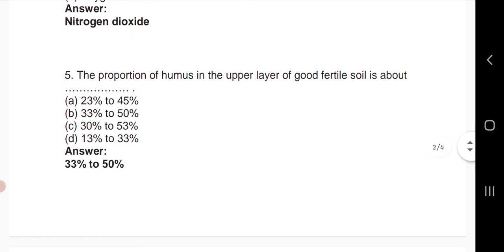Fifth question: the proportion of humus in the upper layer of good fertile soil is about 33 percent to 50 percent.